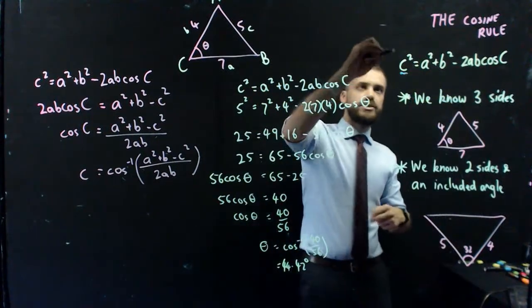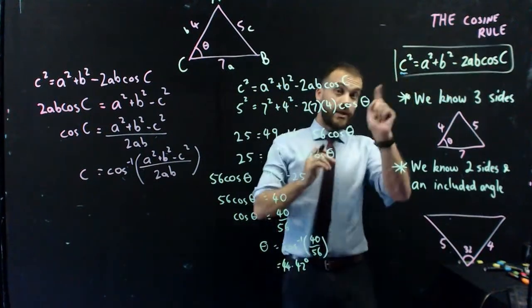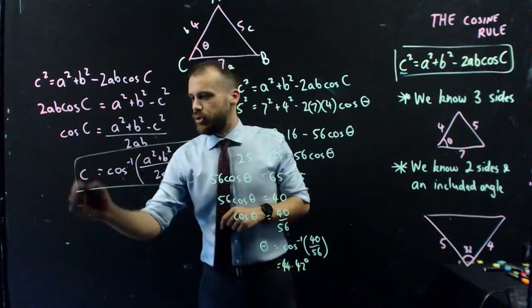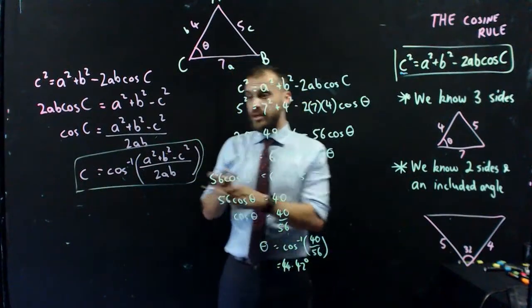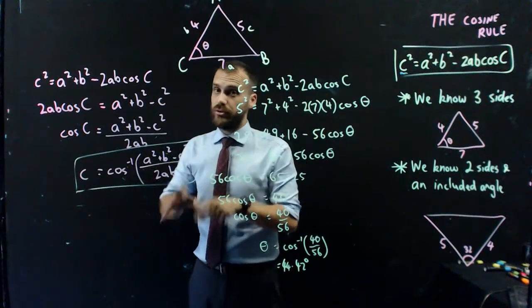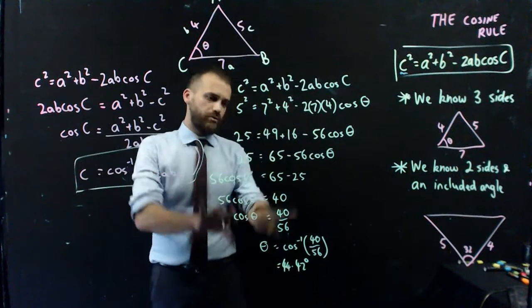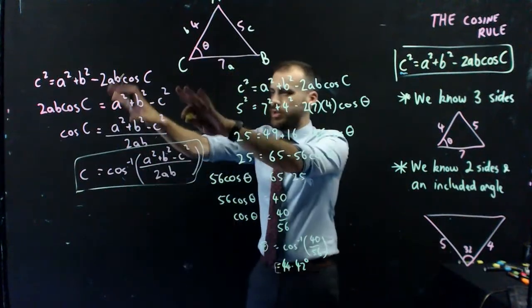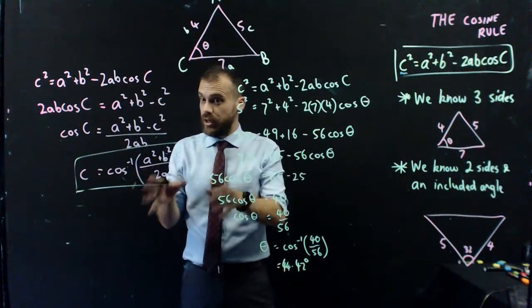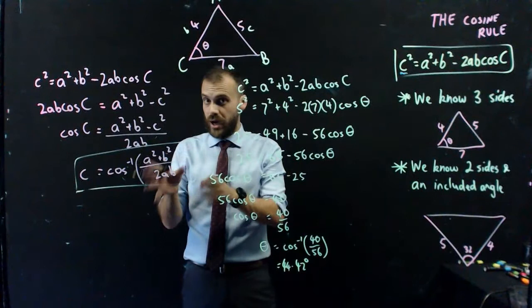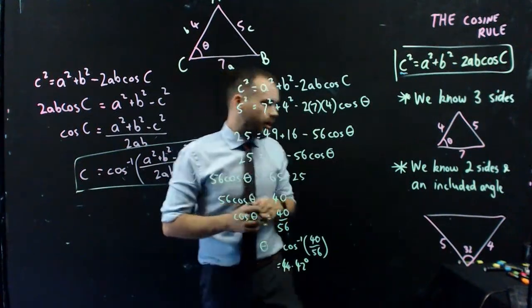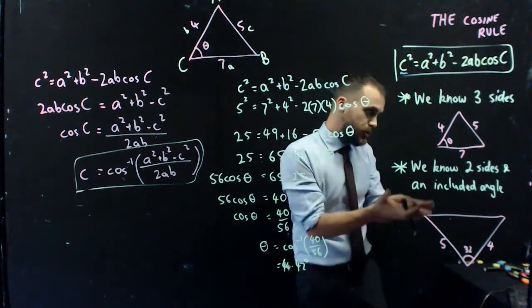Now, important to note this formula appears on your formula sheet. So you don't really have to memorize it. This formula you are free to memorize it and use it if you're being asked to find an unknown angle. But that formula does not appear on your formula sheet. So if you want to avoid having to rearrange things, if you want to avoid having to rearrange things and you just want to memorize a formula, go nuts. You can do that. But just be aware that you have to memorize it if you want to use it and be able to just plug values straight into it. That's the cosine rule.